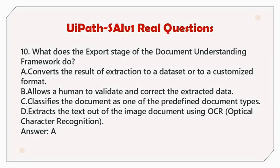Question 10: What does the export stage of the Document Understanding Framework do? a. Converts the result of extraction to a dataset or to a customized format. b. Allows a human to validate and correct the extracted data. c. Classifies the document as one of the predefined document types. d. Extracts the text out of the image document using OCR, Optical Character Recognition. Answer: A.